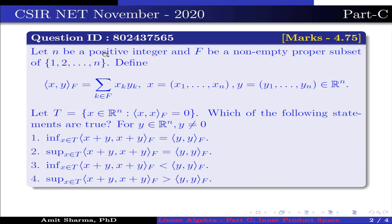The question is: let n be a positive integer and f be a non-empty proper subset of {1, 2, ..., n}. Define inner product ⟨x, y⟩ over f equal to summation over k belonging to f of xk times yk, where x = (x1, x2, ..., xn) and y = (y1, y2, ..., yn) belong to R^n. Let T contain x belonging to R^n such that ⟨x, x⟩ over f is 0. Which of the following statements are true?